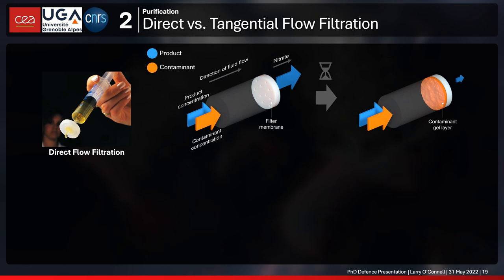In direct flow filtration, you have your crude phage lysate — phage and contaminants mixed together — and you pass the entire liquid column through a syringe filter membrane, hoping only phages pass through. What happens is that contaminants build up on the filter membrane in a process known as membrane polarization, forming a contaminant gel layer that bacteriophages must traverse. The effective pore size gets smaller, meaning you can lose up to about 90% of your phages in one step — retaining only one tenth.